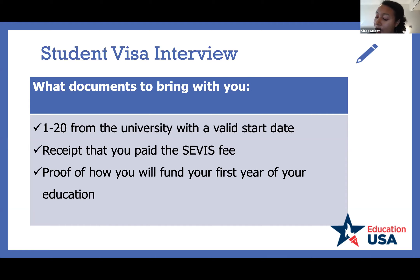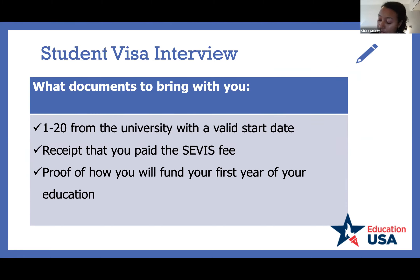After you have been admitted to a program in the U.S., you can apply for a visa interview at the U.S. Embassy. You are encouraged to apply for your non-immigrant student visa as soon as you have your I-20, to ensure you get an early and timely date. When you attend your interview, you must bring the following documents: first, the I-20 from the university with a valid start date; second, the receipt showing you paid the service fee.